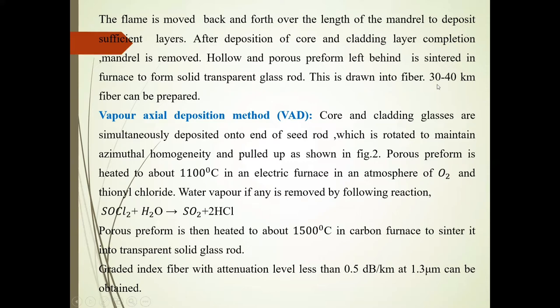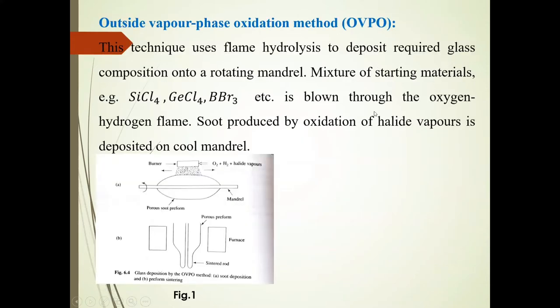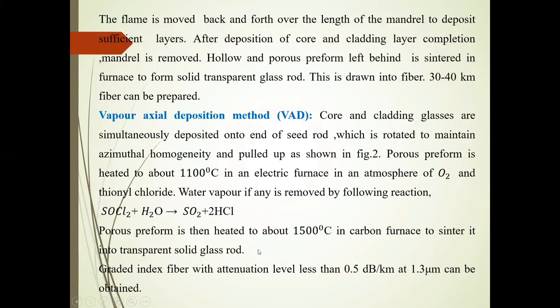A 30 to 40 kilometer fiber can be produced. The rod is sintered here — this is sintered in a furnace, this is the porous preform, and the rod is sintered to form the final preform.